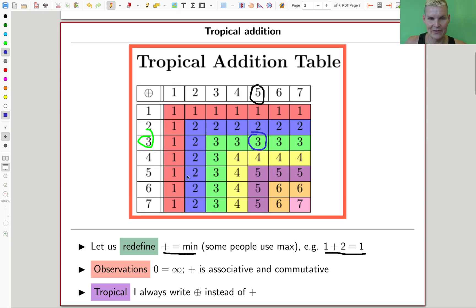This tropical addition table is just ridiculous how simple it is. I understand the pattern: one, two, two, two, two, two, three - you just take the min. Kind of very strange, a little bit strange. You need to get used to it.